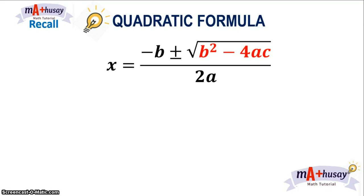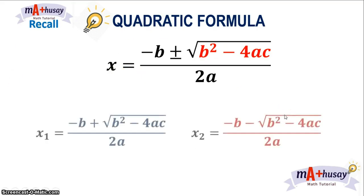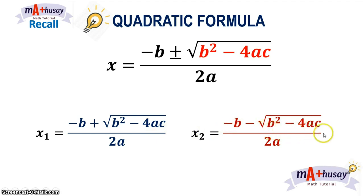We know that any quadratic equation can be solved using the quadratic formula: x is equal to negative b plus or minus the square root of b squared minus 4ac, all over 2a. From the quadratic formula, we let x₁ equal negative b plus the square root of b squared minus 4ac all over 2a, and x₂ equal negative b minus the square root of b squared minus 4ac all over 2a be the roots. Now, we will describe the relationship between coefficients and the roots of a quadratic equation to find the sum and the product of these roots.